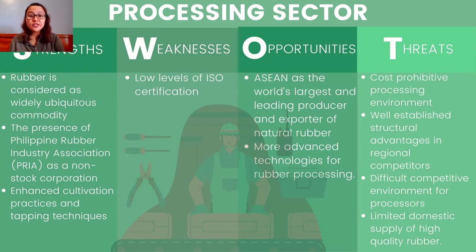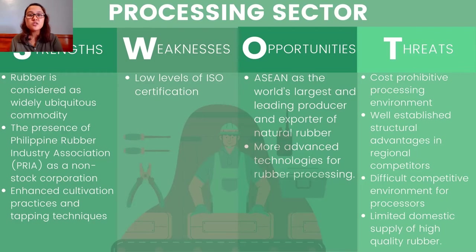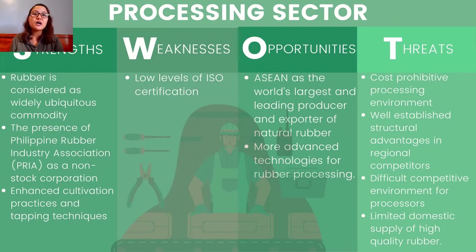For the processing sector, strengths include the presence of the Philippine Rubber Industry Association, a non-stock corporation, and rubber's widespread utilization helpful to people. Through time, cultivation and tapping techniques underwent modifications leading to improved quality of rubber for processing. However, the sector is beset with low levels of ISO certification. Opportunities include the introduction of advanced technologies for rubber processing and the Philippines' close proximity to major processors and consumers of rubber. Threats include the cost-prohibitive processing environment and the high level of competitive environment among rubber processors.